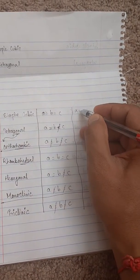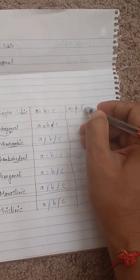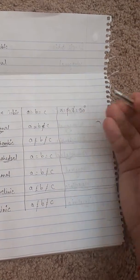Here we go. Simple cubic: alpha equals beta equals gamma equals 90 degrees.